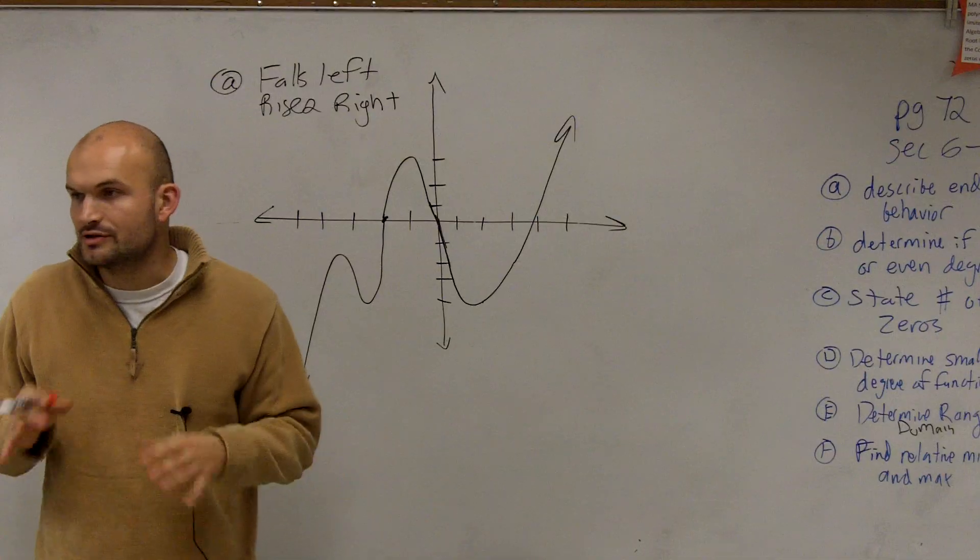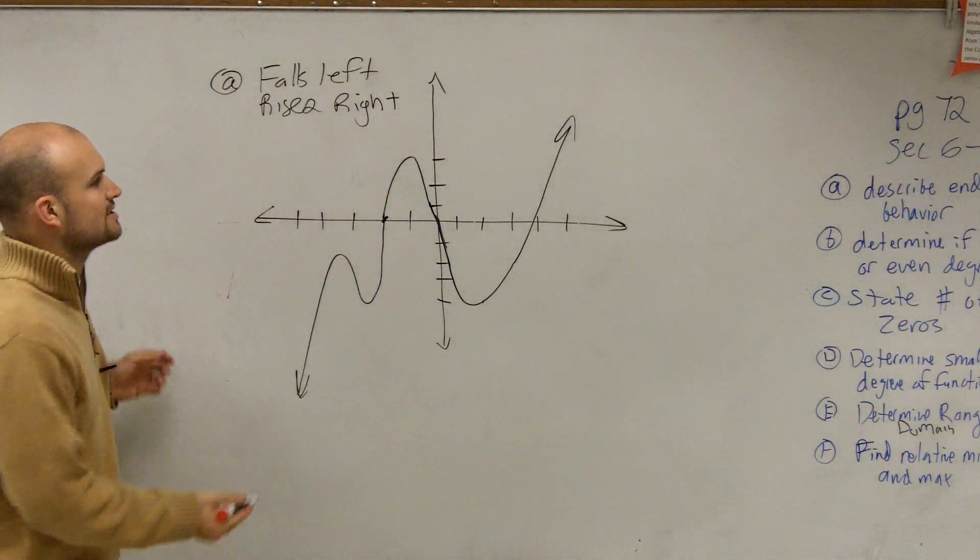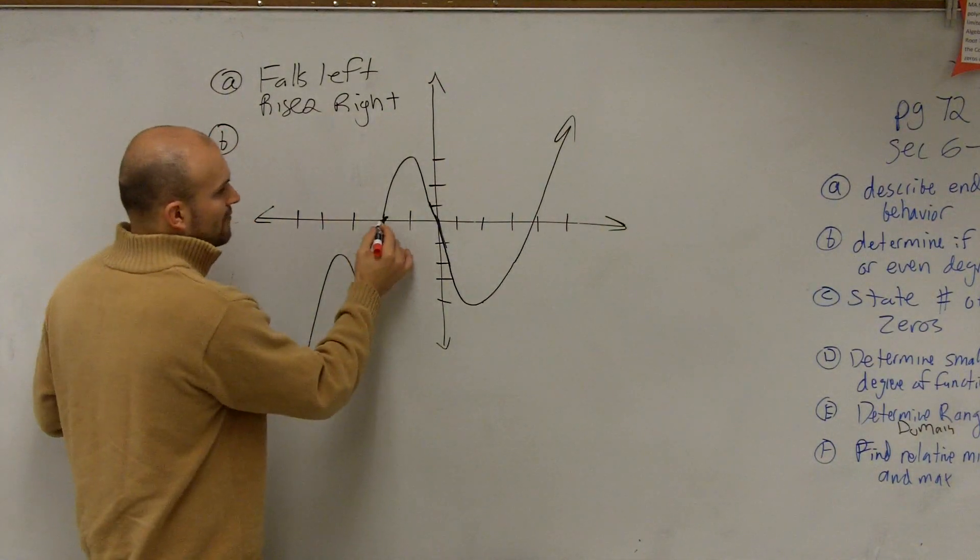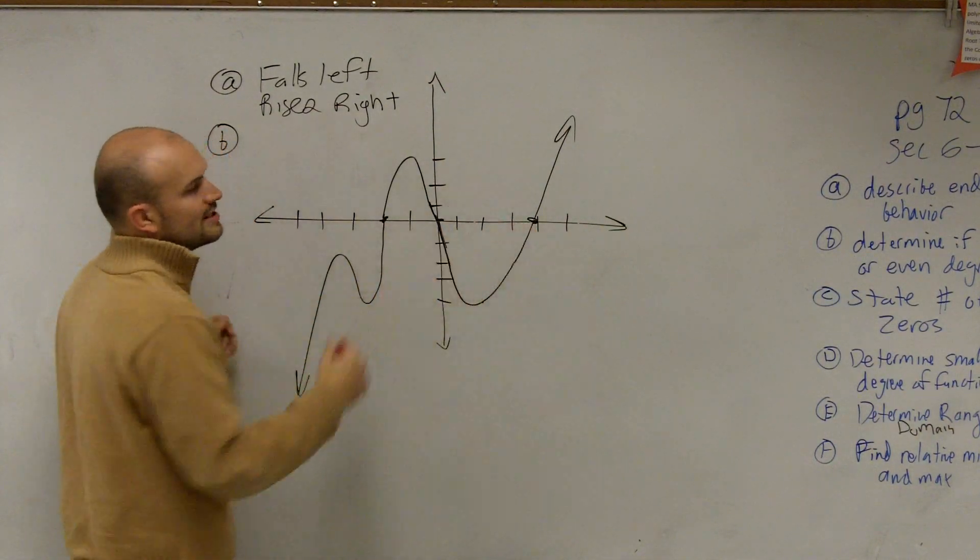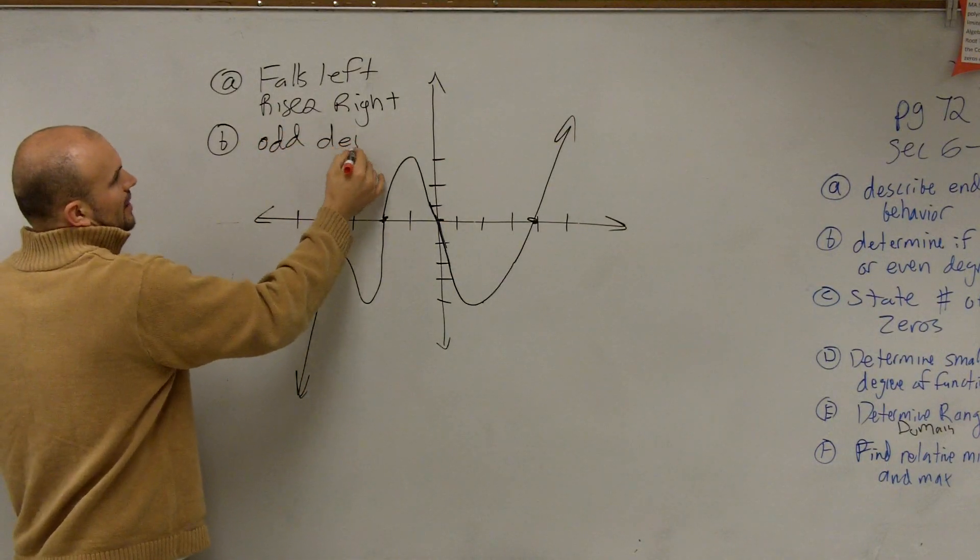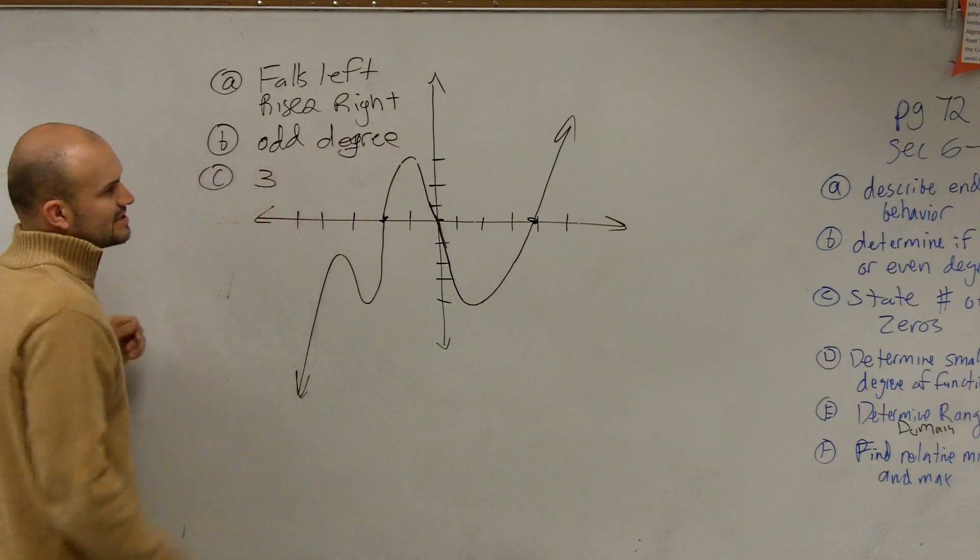However, for your homework, you should know how to do it the more algebraic way, which I explained last time. The next one is to determine if it's an odd or an even degree. So we look at the number of zeros. We have one, two, three zeros. So therefore, we know that this has to be an odd degree polynomial.